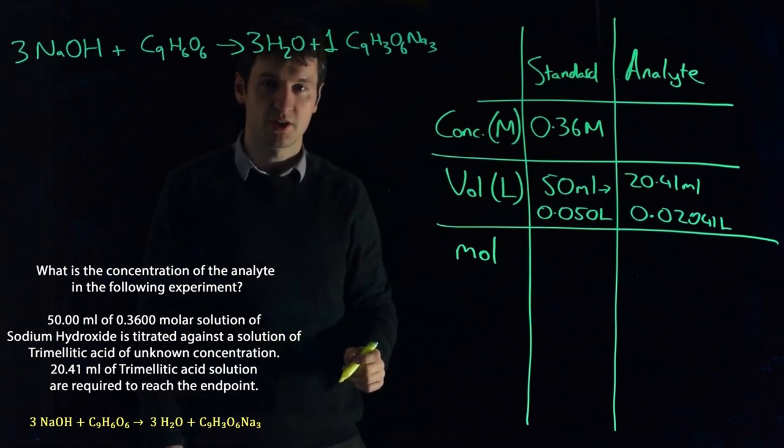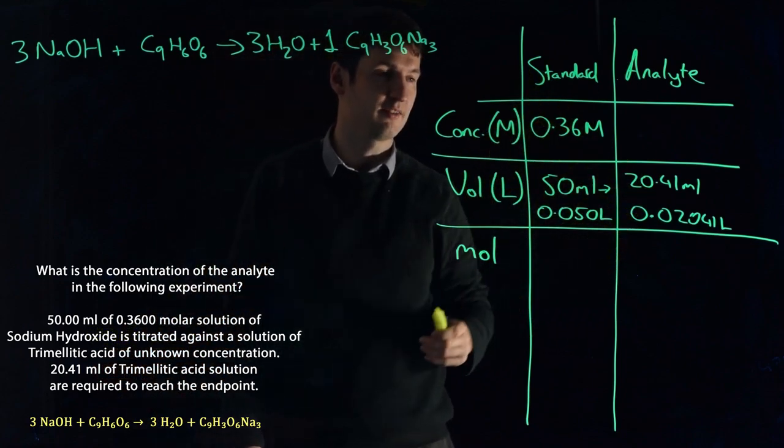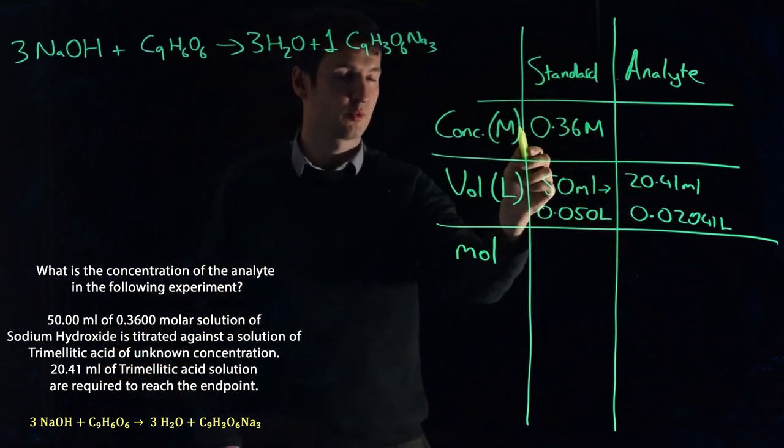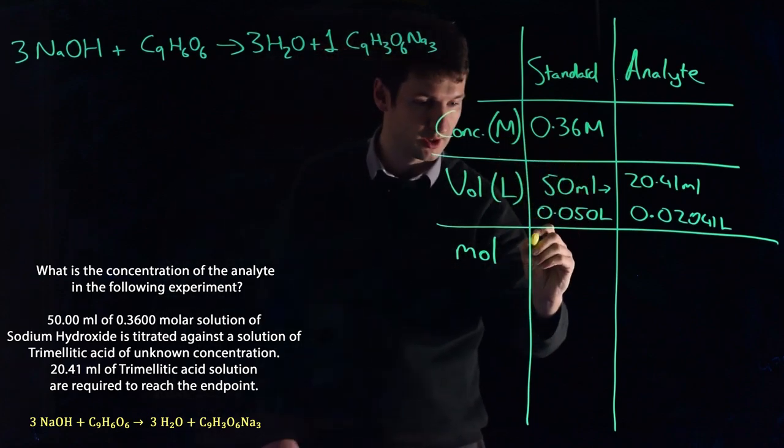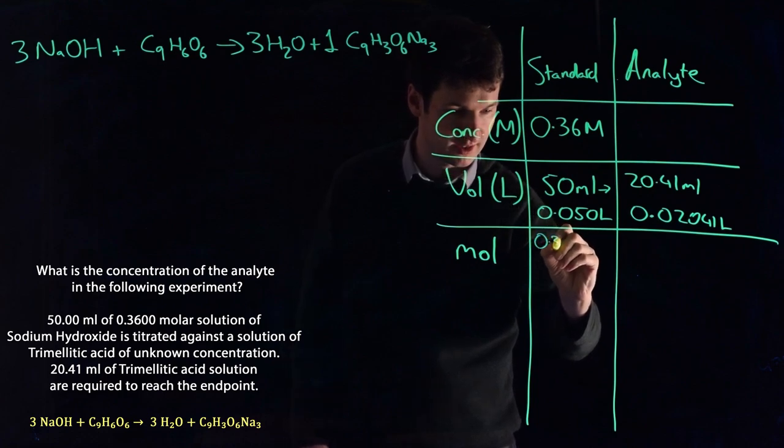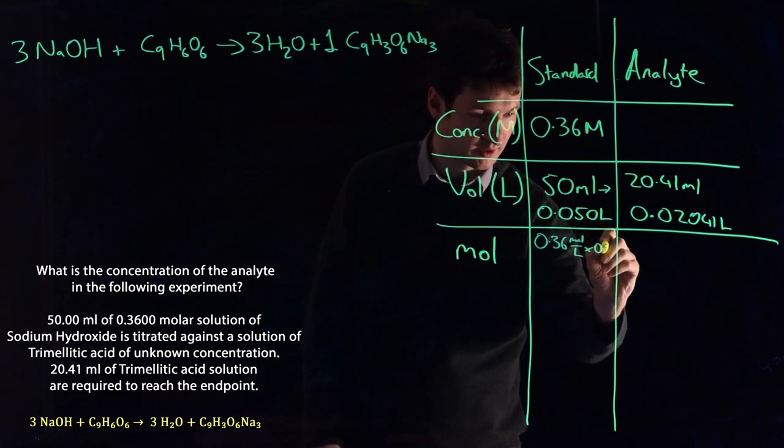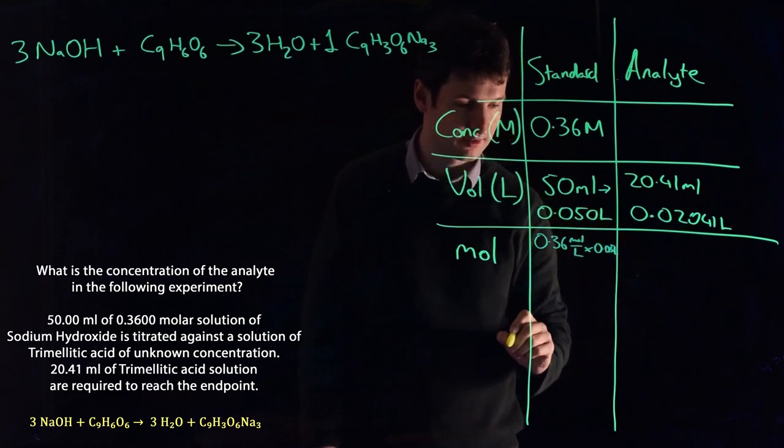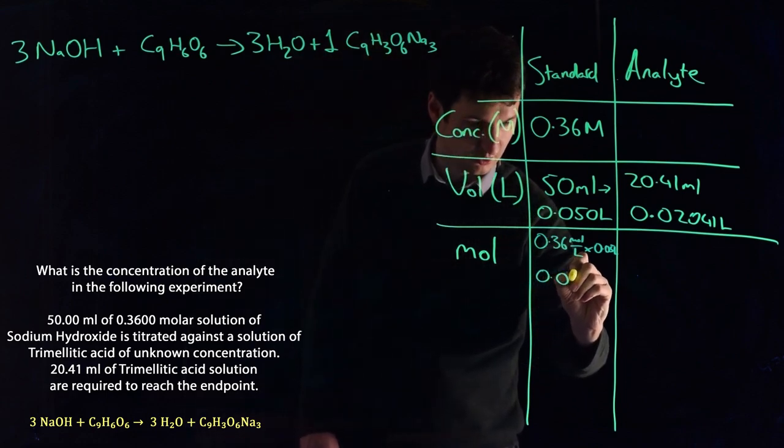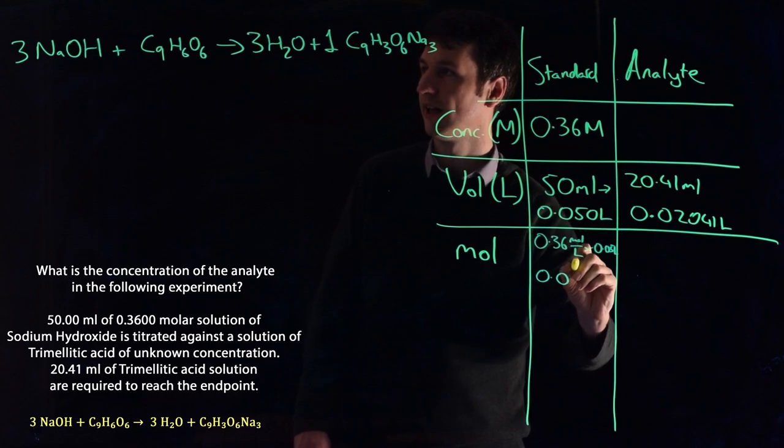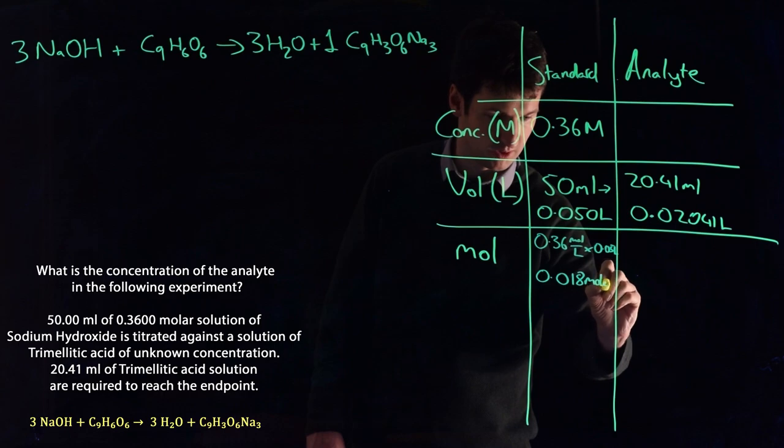So let's try and solve out our equation then. This is in the question. All we have left to do is fill in the grid. So we know our concentration multiplied by our volume will give us our number of moles. So our concentration is 0.36 moles per liter multiplied by 0.05 liters is equal to 0.018 moles.